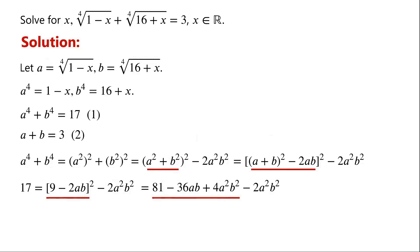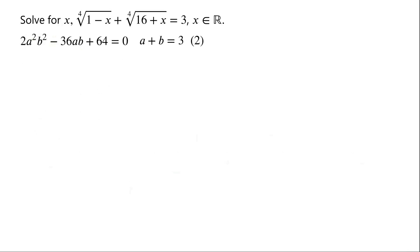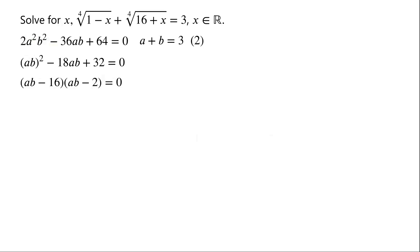Expanding (9 minus 2ab)² gives 81 minus 36ab plus 4a²b². Rearranging and simplifying the equation, we have 2a²b² minus 36ab plus 64 equals 0. Dividing the equation by 2, we get (ab)² minus 18ab plus 32 equals 0. This is a quadratic equation in ab. The left side can be factorized as (ab minus 16)(ab minus 2) equals 0.